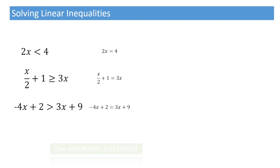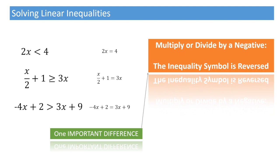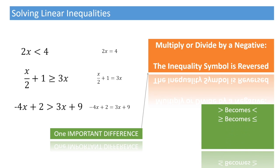there is one very important difference. When we solve linear inequalities, and in fact inequalities in general, when we multiply or divide both sides of the inequality by a negative number, the inequality symbol is reversed. What that means is, when we multiply by a negative, greater than becomes less than, greater than or equal to becomes less than or equal to, less than becomes greater than, and less than or equal to becomes greater than or equal to.